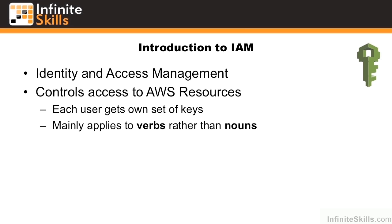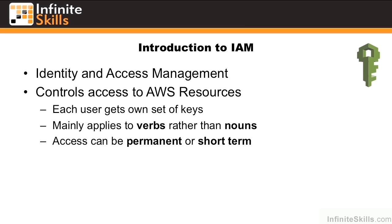IAM applies mainly to verbs rather than nouns. For example, we could say allow a user to create — a verb — EC2 instances, but not create instances of a certain type, such as larges or smalls. Access can be permanent or short-term. We can give users an expiring account that expires in two weeks, two months, or some other timeframe.